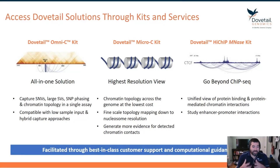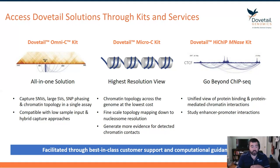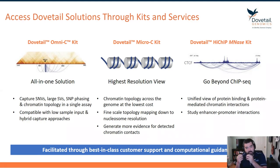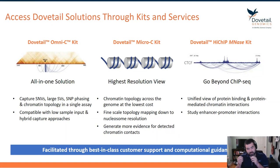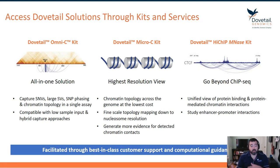You can access all of these Dovetail solutions through either kits or services. Omni-C, Micro-C, and Hi-CHIP are all available through a kit that's easy to use and walks you from sample prep all the way through sequencing. We also have analytical support that will help you align the data, process the data, and get you to ask your biological question — we don't want you spending a lot of time thinking about data processing.